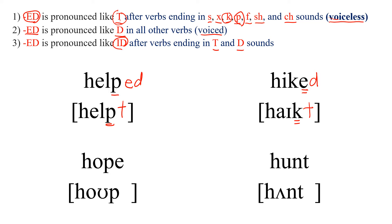Next one: HOPE. E ending, so we just put D. This is a P ending, one of the voiceless sounds. So we use T here and we read it: HOPED.